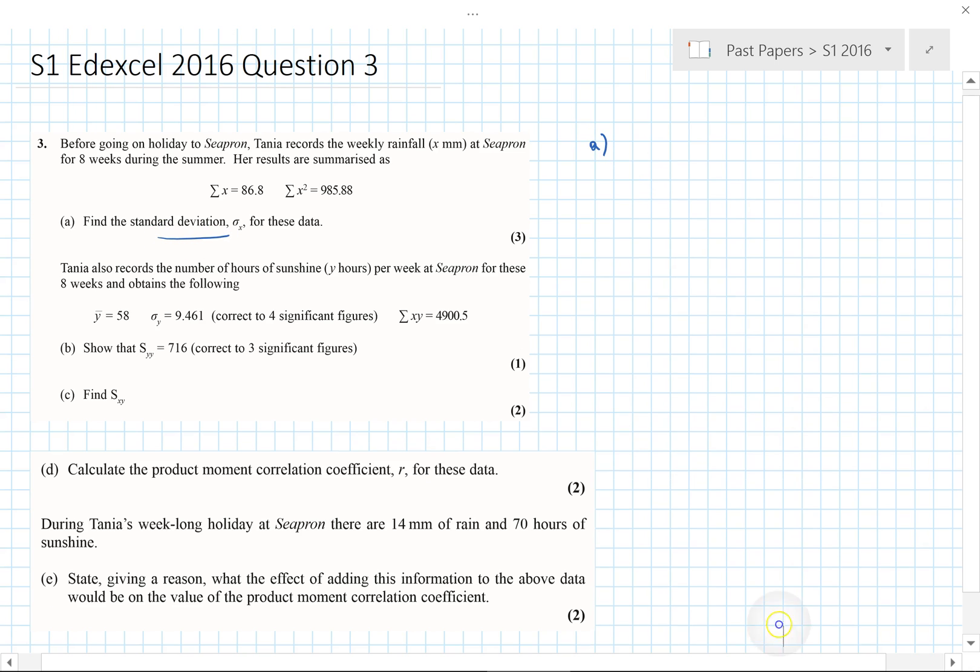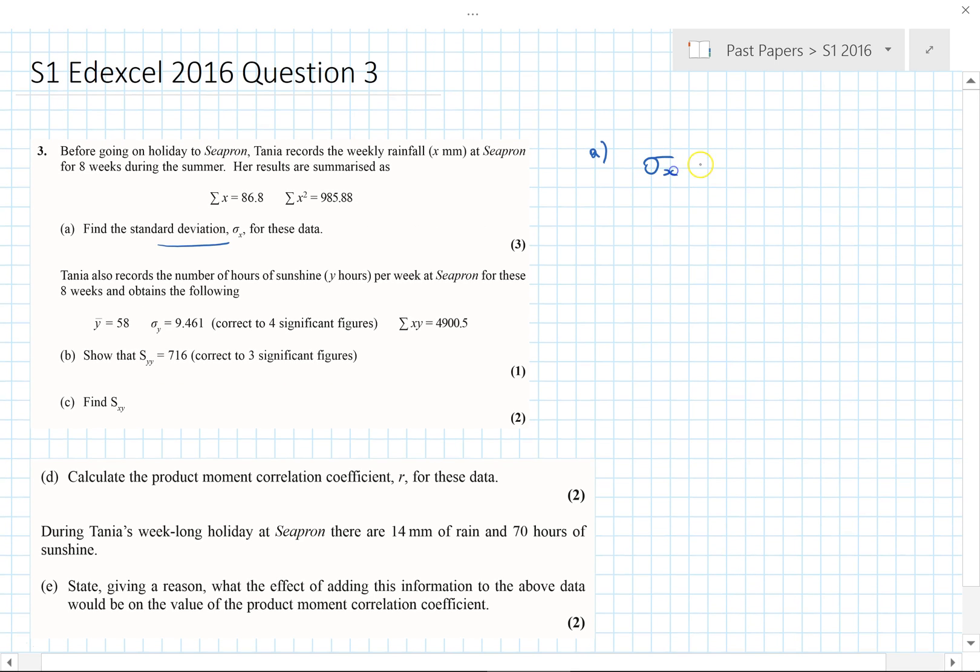The standard deviation thing is okay. We know the standard deviation of X, we just need to know the formula for that. The most useful formula normally is this one: sigma X squared over N, take away mu squared. So that's sigma X squared, which we're given as 985.88 over N. We know there's 8 weeks, take away mu squared, so that's 86.8, the mean, divided by 8 squared. That will give us the standard deviation of 2.35.